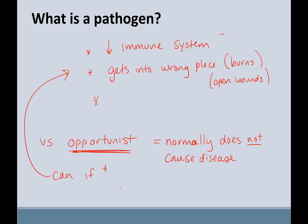A lot of times these are also related to what we call secondary infections. Because your immune system is weak and the pathogen can get into the wrong place, you can get a secondary infection. These microbes normally don't cause infections, but they are opportunists in this environment.